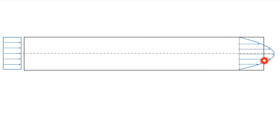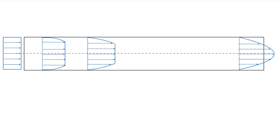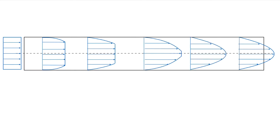Here we have a pipe flow. Imagine that we have a constant velocity profile coming into the pipe flow. Black is our pipe. As that flow enters the pipe, we have the no-slip condition on the wall, and so we start to see this profile changing as we go into the pipe. As we move further along the pipe, we'll see further changes until we get to a certain point where we do not see changes in that velocity profile anymore.